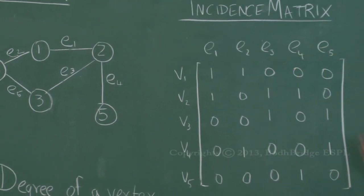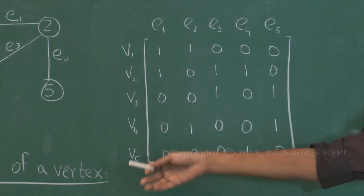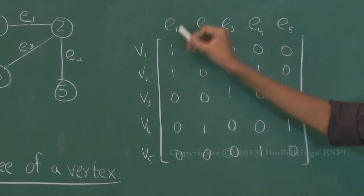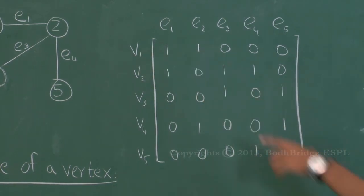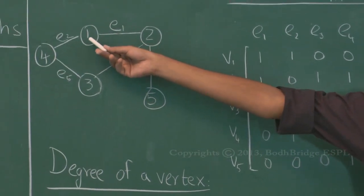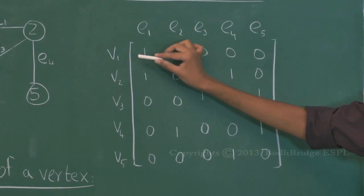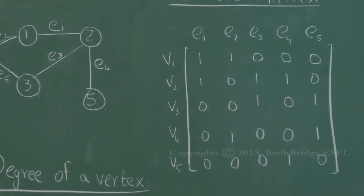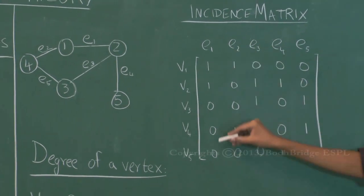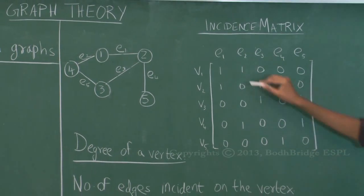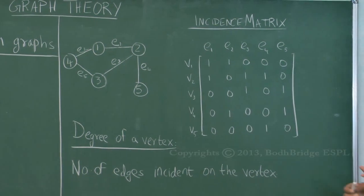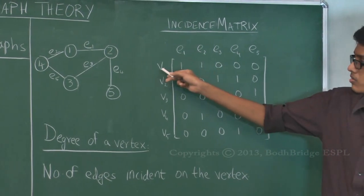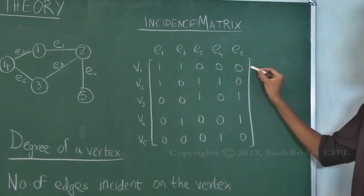In the incidence matrix, the rows represent the vertices and the columns represent the edges. The first column is edge 1, and the value in that column will be 1 wherever it is incident. Edge 1 is incident on vertex 1 and vertex 2, so in the matrix it will be 1 for V1 and V2 and 0 for the rest. An important point is that the sum of each column will always be 2, because an edge is always incident on exactly two vertices — so each column sums to 1 plus 1.